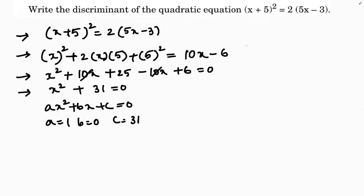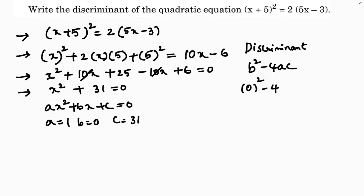Now we find the discriminant, which is b² − 4ac. Substituting: 0² − 4(1)(31) = 0 − 124 = −124. So the discriminant is −124.